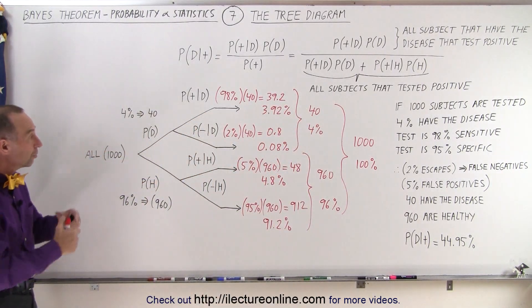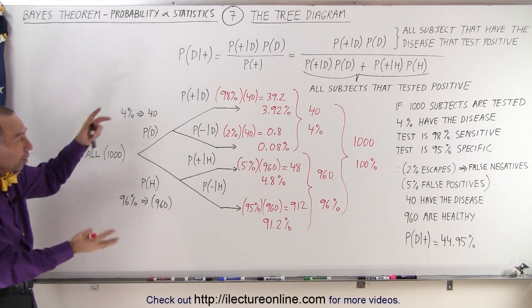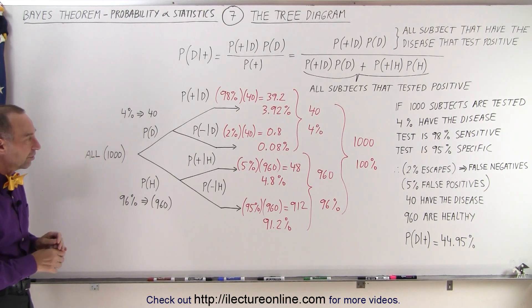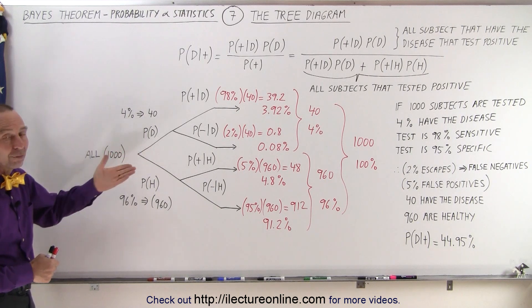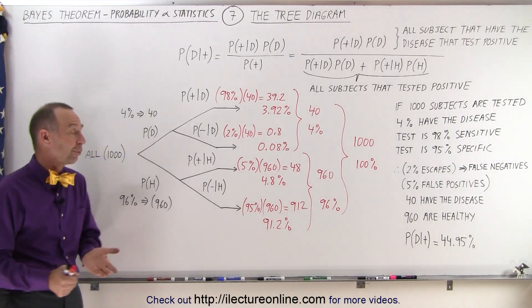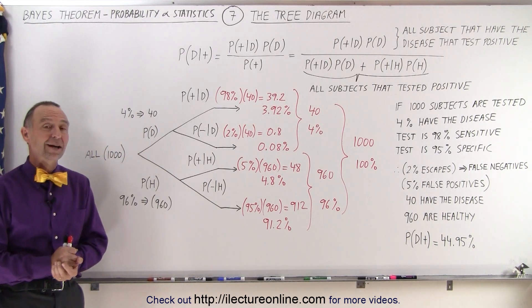So you can see that this is how we use the tree diagrams to separate all the various combinations of tests, and whether or not the people or subjects have what you're testing for, or don't have what you're testing for. And that's how it's done.